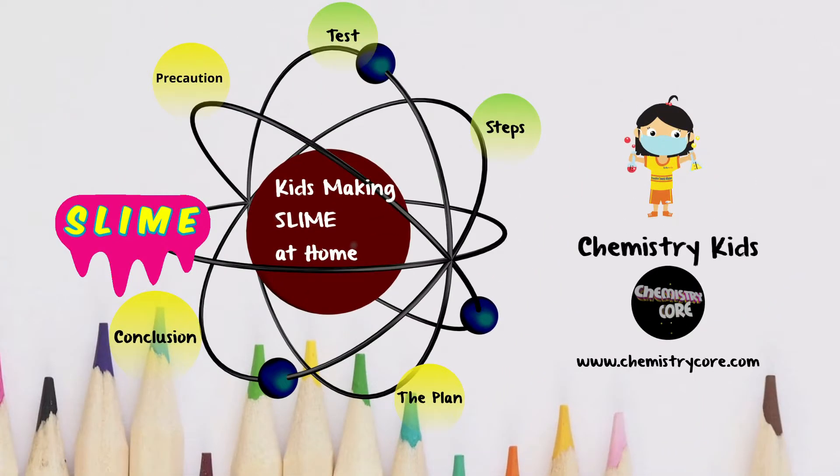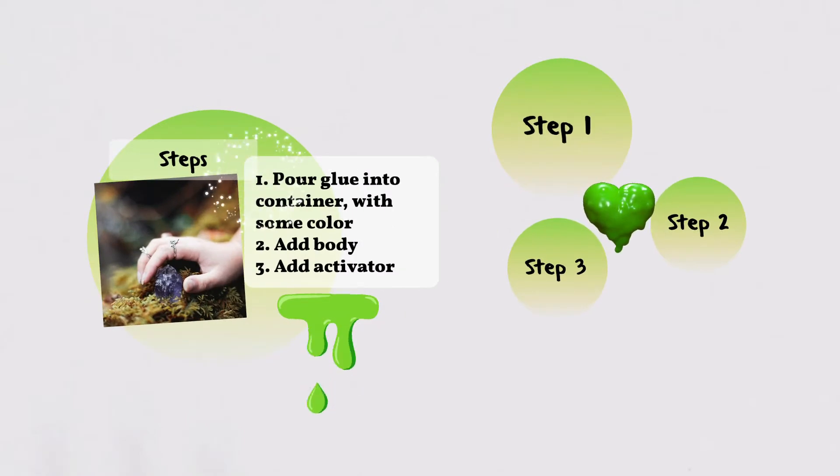So what are the steps involved? First we will pour glue into container and add color to improve the look. Then we'll add body by pouring in chemicals to improve the feel and finally we will add the activator.